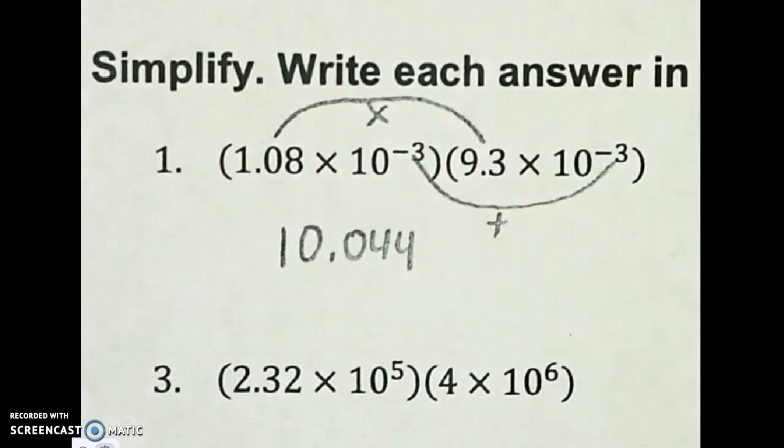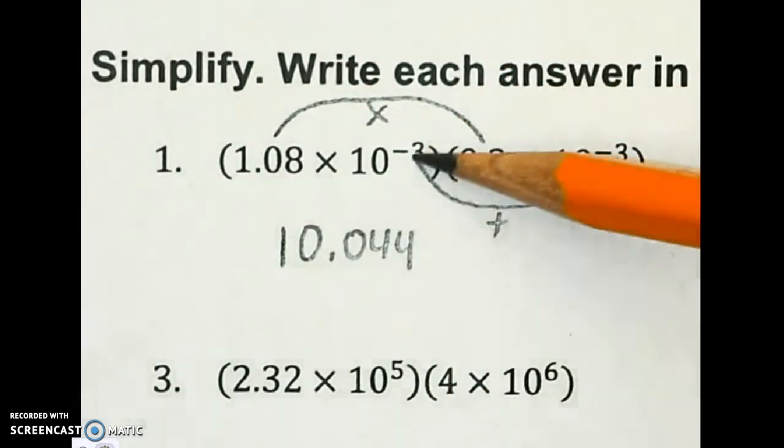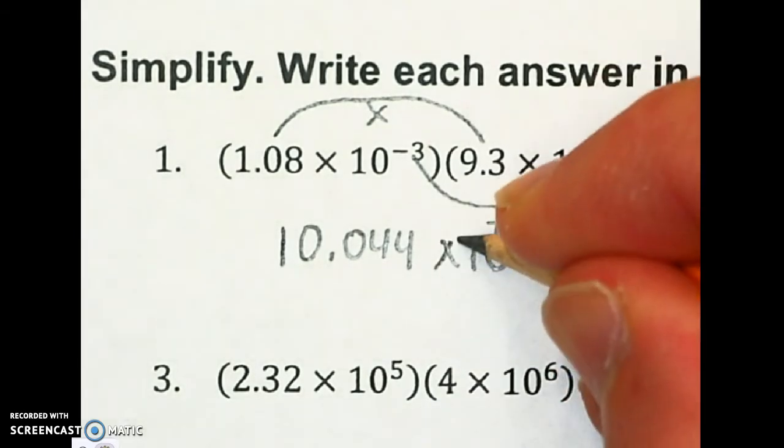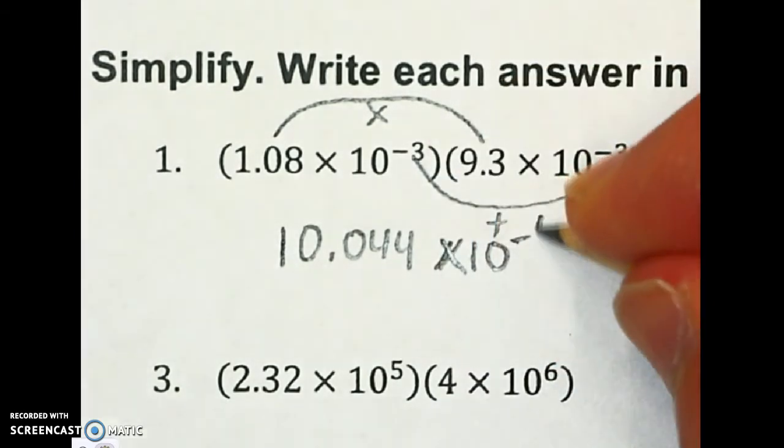Now I need to take my powers and add them up. So this is going to be times 10, negative 3 plus negative 3 is negative 6.